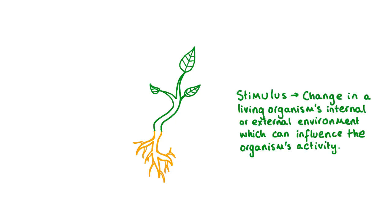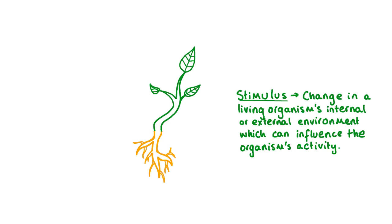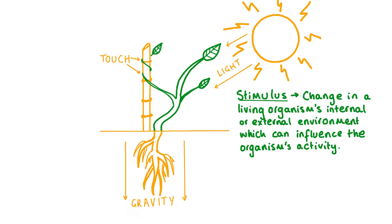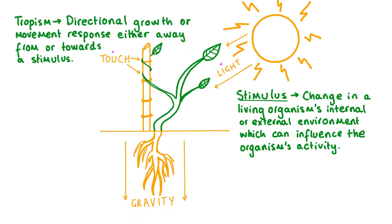A stimulus is a change in a living organism's internal or external environment which can influence that organism's activity. Plants can move in response to stimuli like light, touch, gravity, and even heat. Some of these stimuli, like light or touch in certain plants, trigger a directional movement response, growing either towards or away from the stimulus. These directional growth movements are called tropisms.